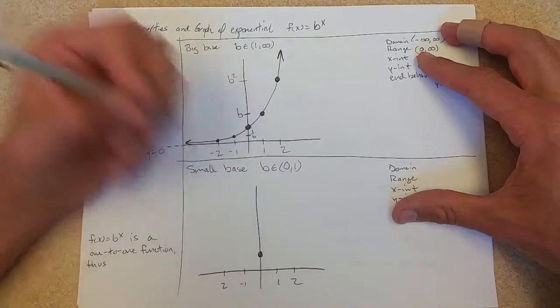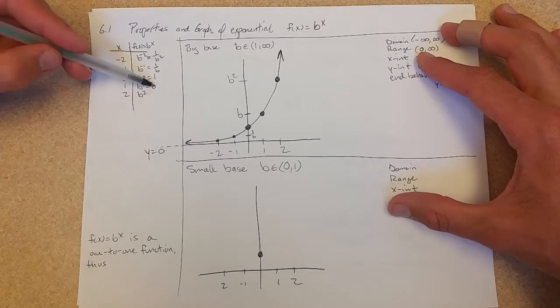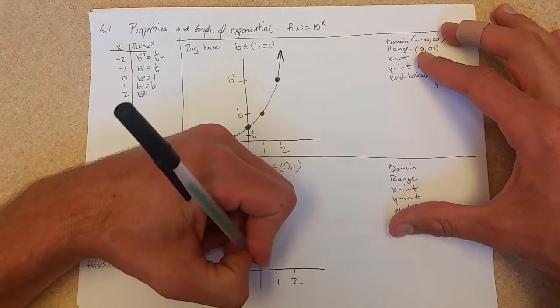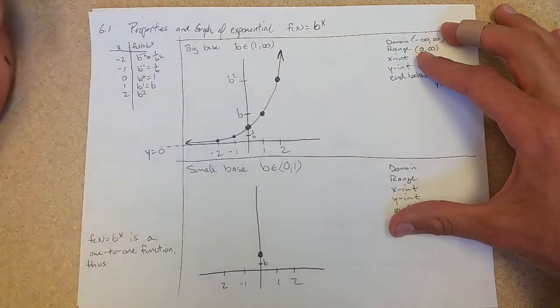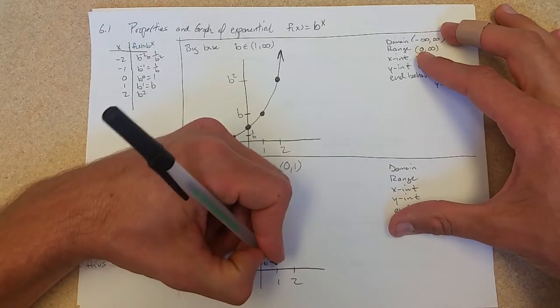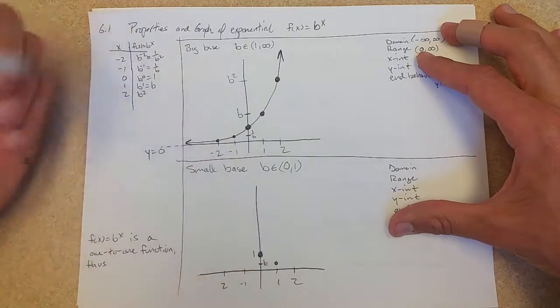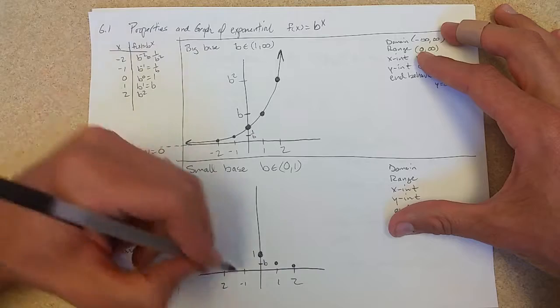Now b, when x is 1, our y-value is b. Now b is small. We'll call that 1, there's b. Now b is a half, b squared is going to be a fourth, right there.